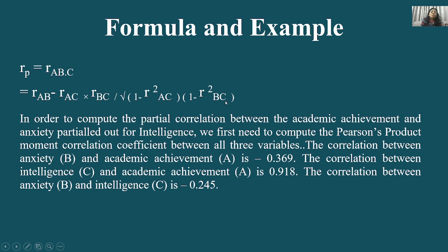In order to compute the partial correlation between academic achievement and anxiety, partialling out intelligence, we first compute the Pearson's product moment correlation coefficients between all three variables. The values are: R_AB (anxiety and academic achievement) = −0.369, R_AC = 0.918, and R_BC = −0.245. Substituting into the formula: numerator = −0.369 − (0.918 × −0.245); denominator = √[(1 − 0.918²)(1 − 0.245²)].